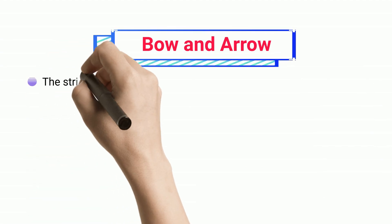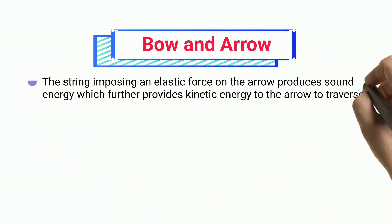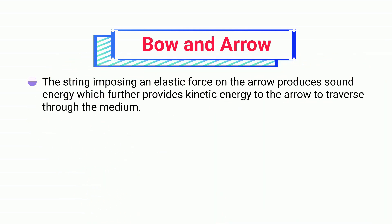Bow and arrow. The string imposing an elastic force on the arrow produces sound energy which further provides kinetic energy to the arrow to traverse through the medium.